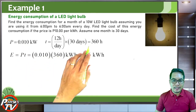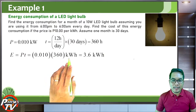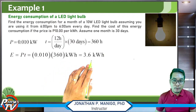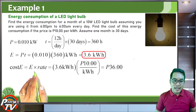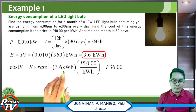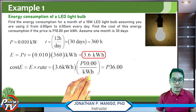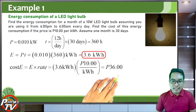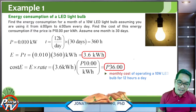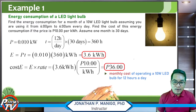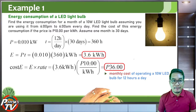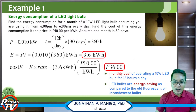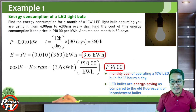The energy consumption is power times time: 0.010 kilowatts times 360 hours equals 3.6 kilowatt-hours. To find the cost, multiply the energy by the rate: 3.6 kilowatt-hours times 10 pesos per kilowatt-hour gives 36 pesos. So the monthly cost of operating a 10-watt LED bulb for 12 hours a day is just 36 pesos — LED bulbs are very energy efficient compared to old fluorescent or incandescent bulbs.